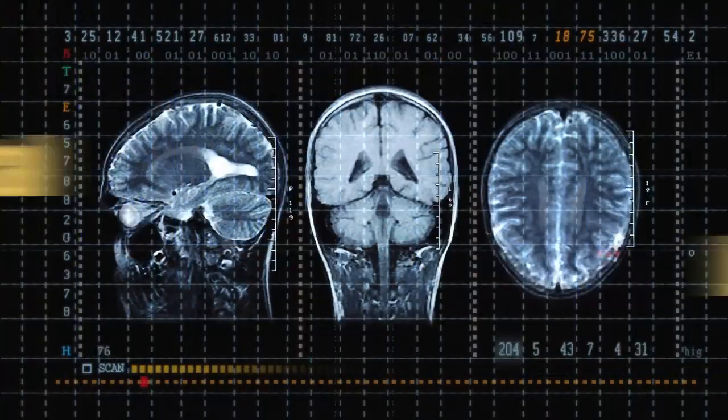Today's podcast deals with the skills and functions associated with the lobes of the brain. There is the frontal lobe, the parietal lobe, the temporal lobe, the occipital lobe, and the cerebellum.